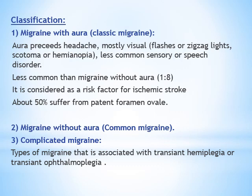The second type is common migraine, without aura. The third type is complicated migraine, which is associated with transient hemiplegia or transient ophthalmoplegia.